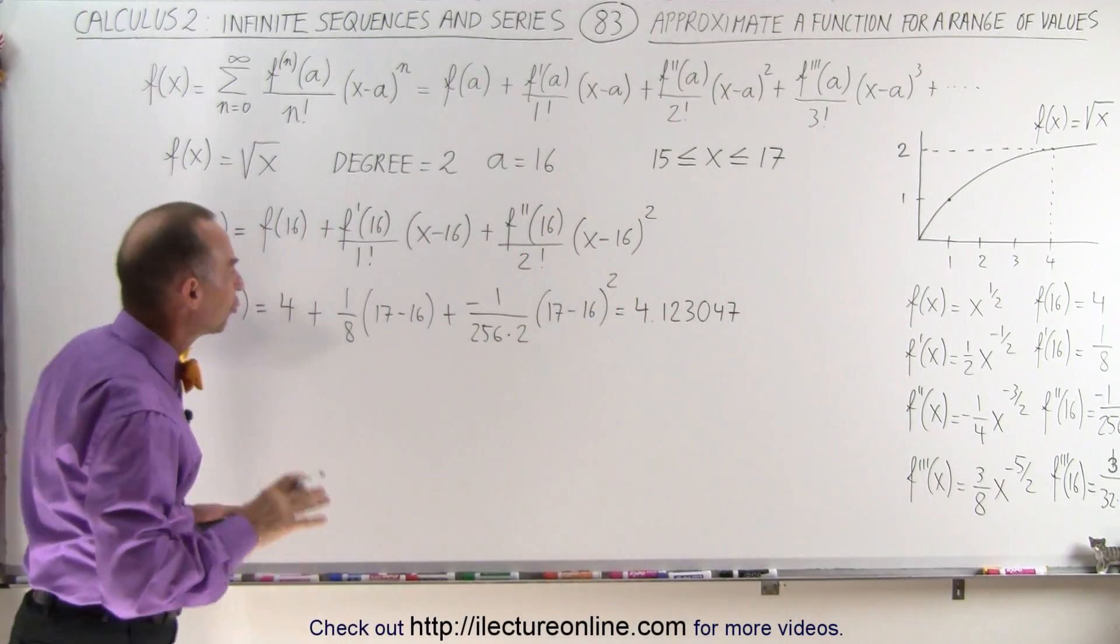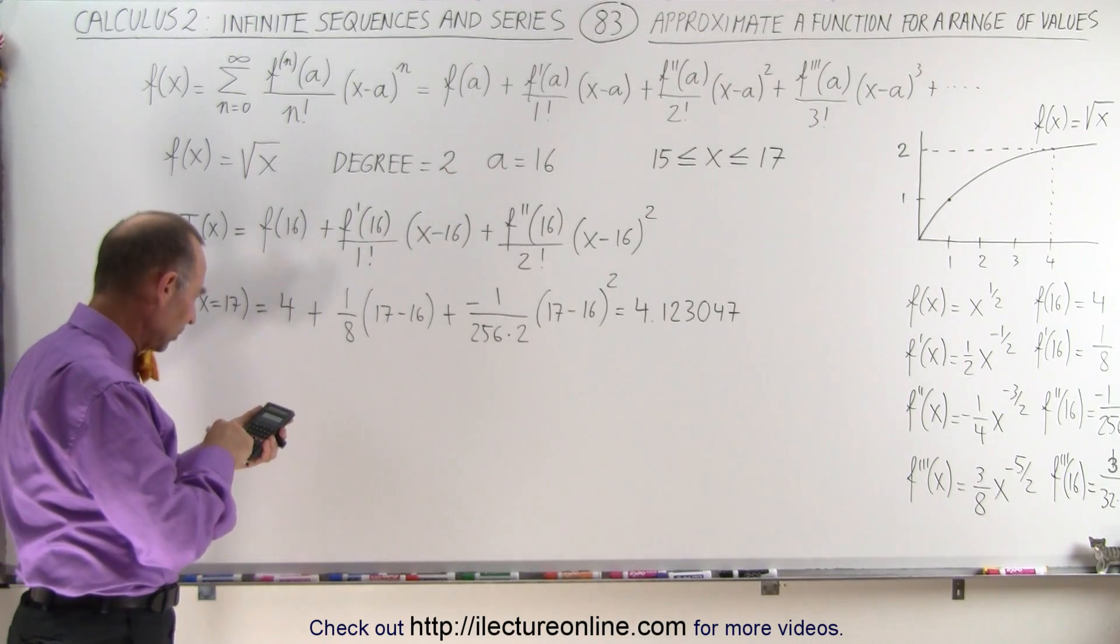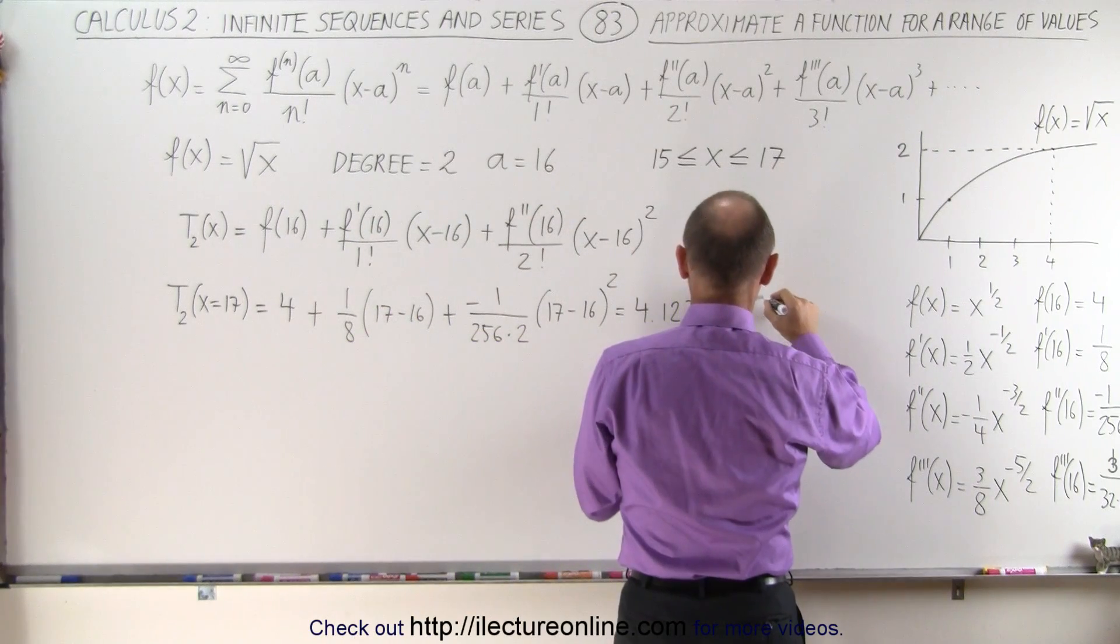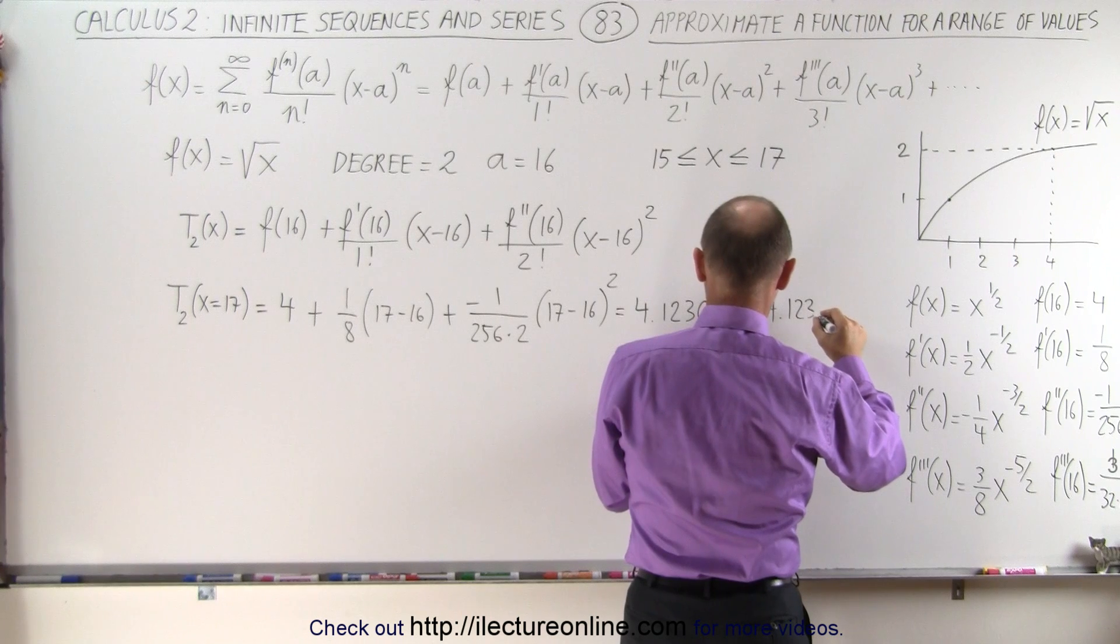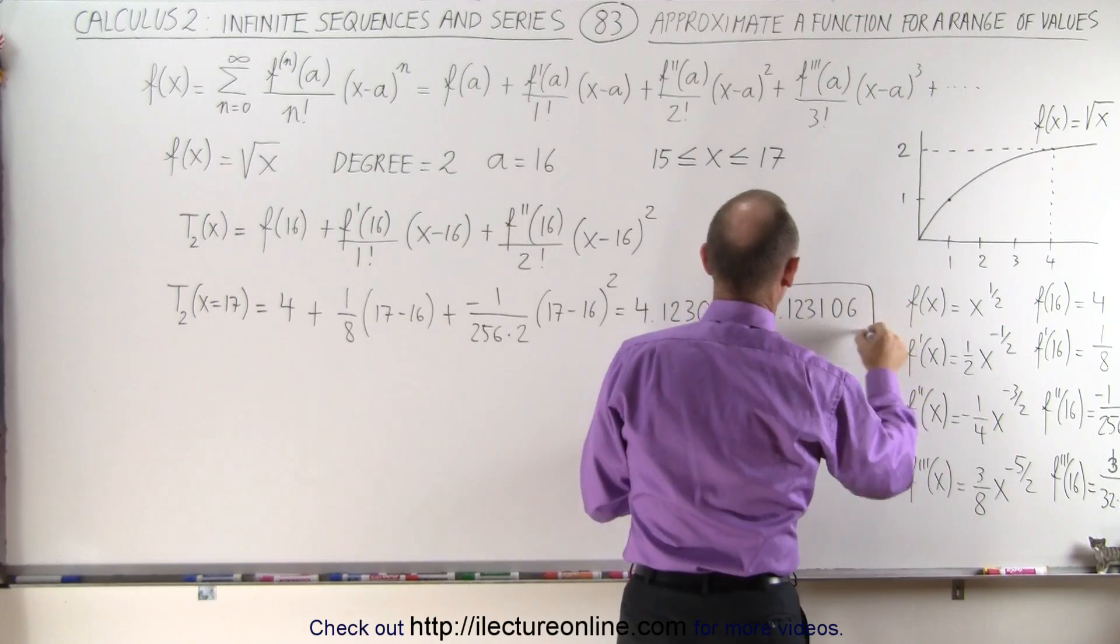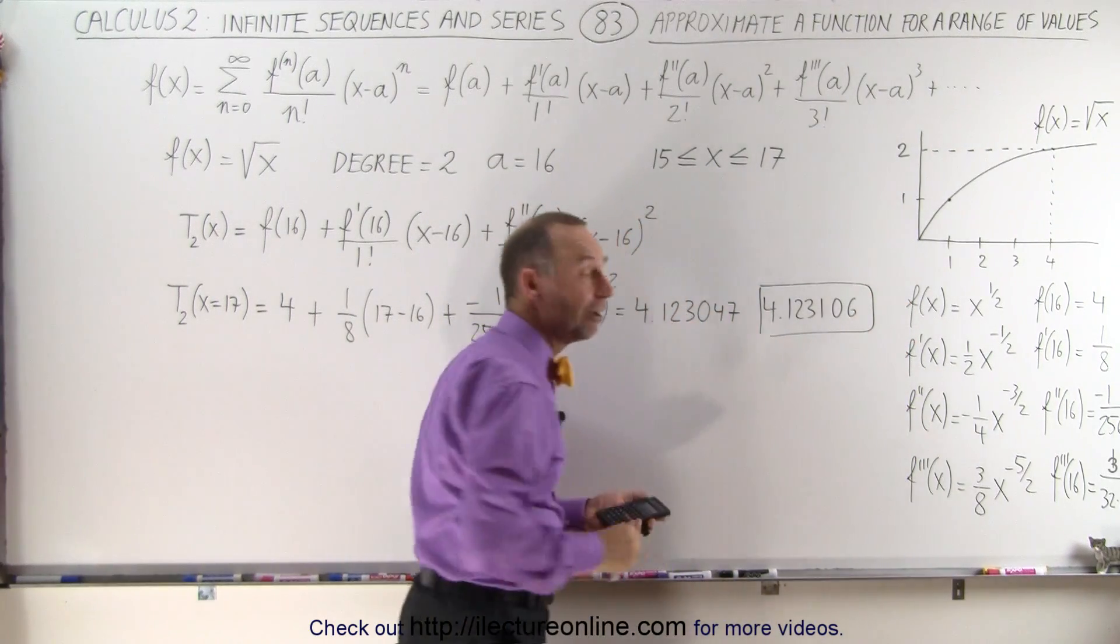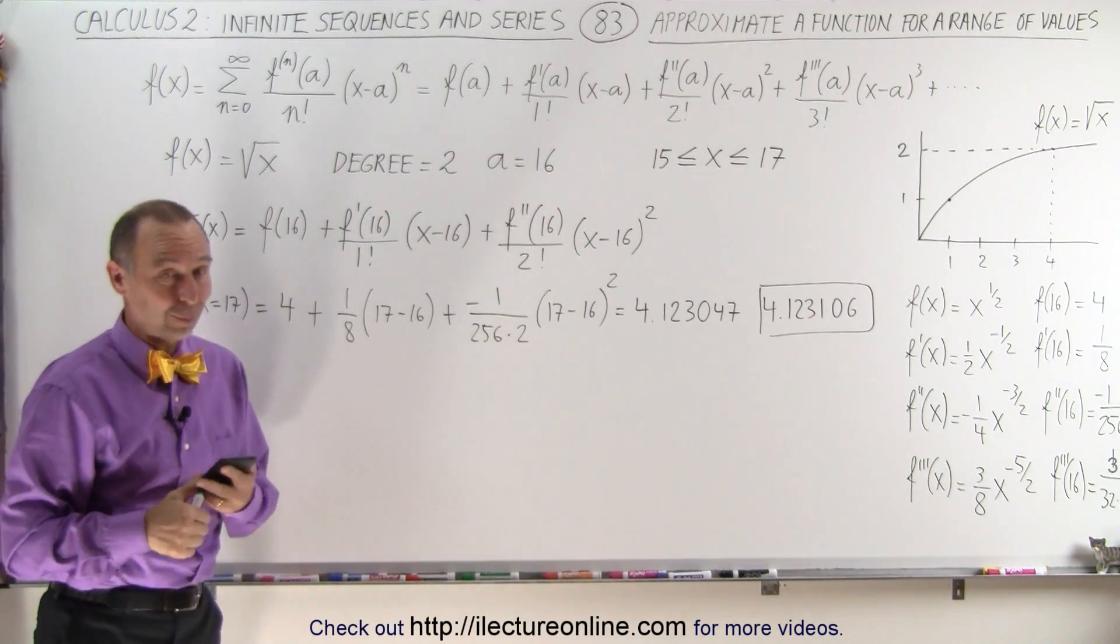What would the actual square root of 17 be? Just for a reference. So let's try that. So we take 17, take the square root, and that gives us the actual value of 4.123106. So notice for the first three decimal places, we get the exact value by only utilizing the first three terms in the expansion. That's really good.